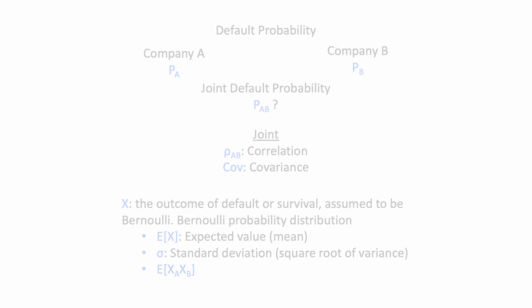Let's write down the formula for correlation coefficient. Rho is covariance divided by the standard deviation of the two variables, or the square root of their variance. Expanding the covariance is the expected value of the product minus the product of the expected values.